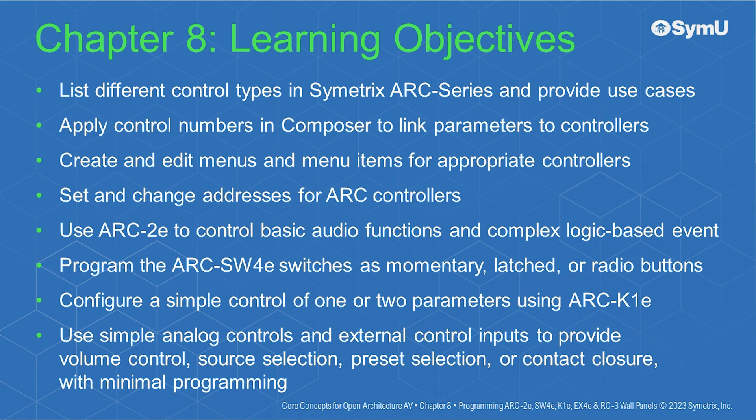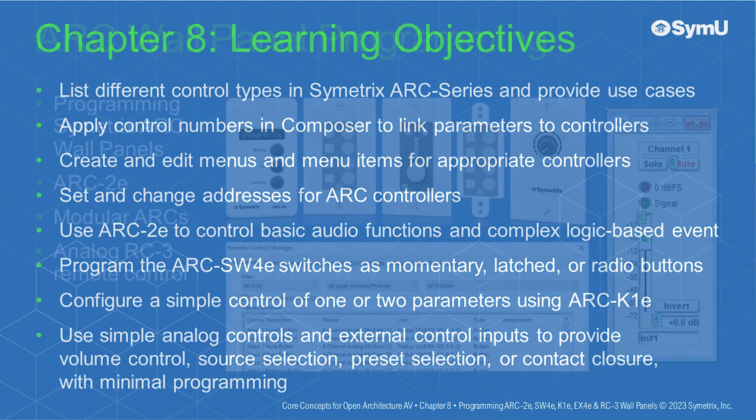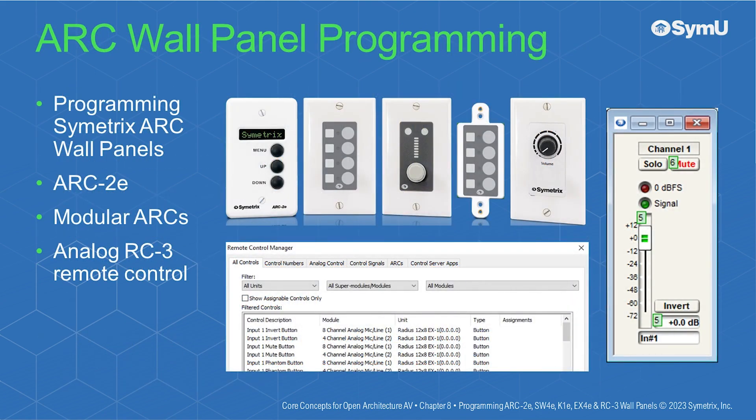Additional goals include programming the Arc SW4E switches as momentary, latched, or radio buttons; configuring simple control of one or two parameters using Arc K1E; and using simple analog controls and external control inputs to provide volume control, source selection, preset selection, or contact closure with minimal programming. This chapter covers programming Symmetrix Arc wall panels including the Arc2E, modular arcs, and the analog RC3 remote control.